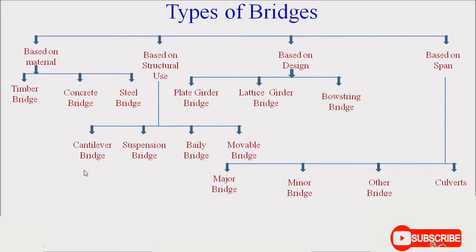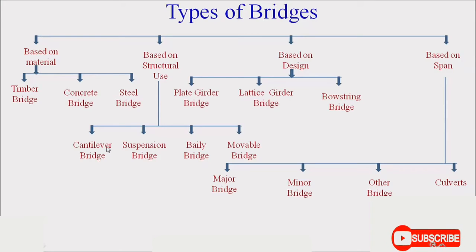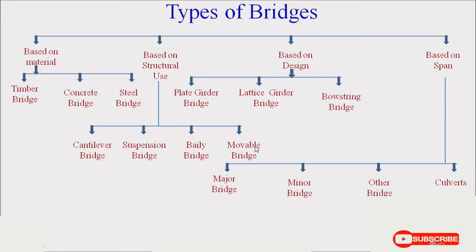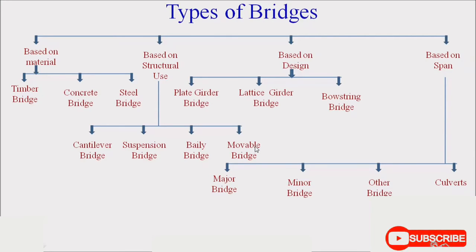Based on structural use means for what purpose you are using the bridge: cantilever bridge, suspension bridge, belly bridge, and movable bridge. Suspension bridges and movable bridges are mostly used where you have to cross a river used for water transportation by ships or large boats, so you can make way for boats to pass below the bridge without disturbing the bridge construction.